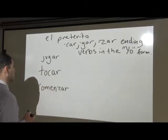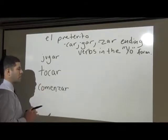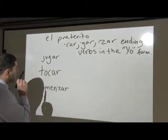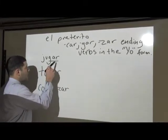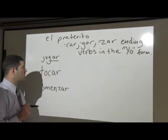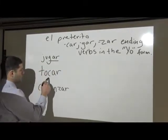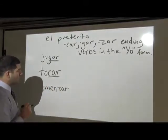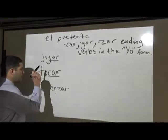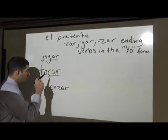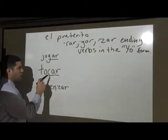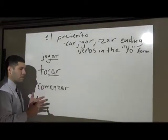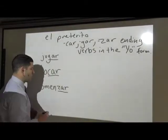These verbs are otherwise regular, except for issues with pronunciation. You have a verb that ends in GAR — jugar, which is to play. Tocar ends in CAR. These are all AR verbs. The endings are GAR, CAR, and ZAR. Tocar means to touch or to play an instrument, and comenzar means to commence, to begin, to start.